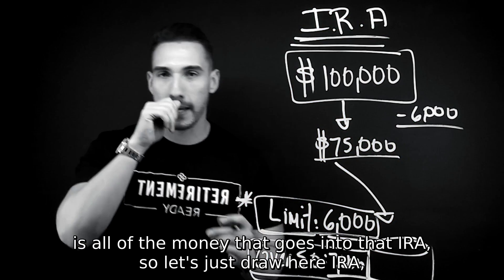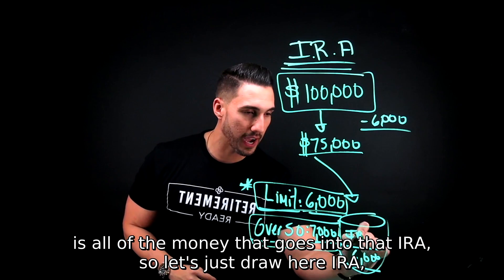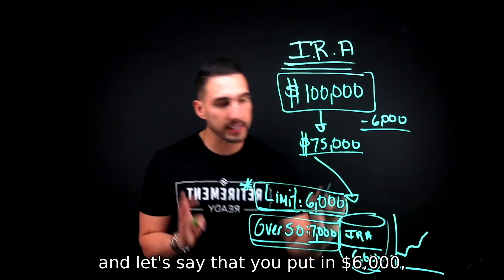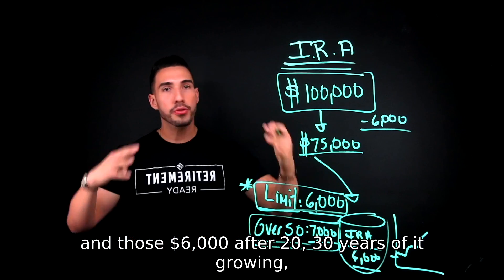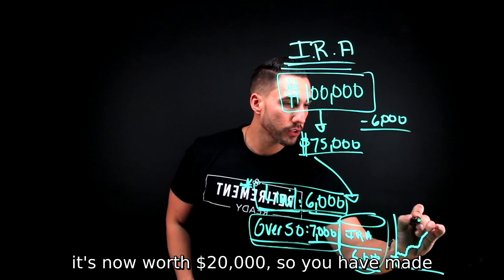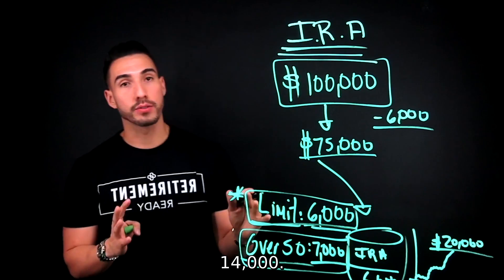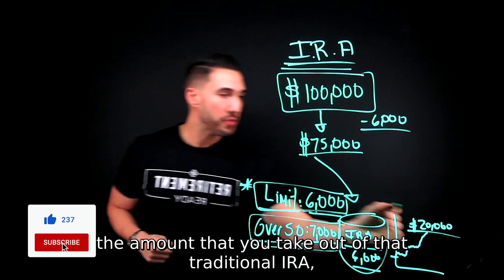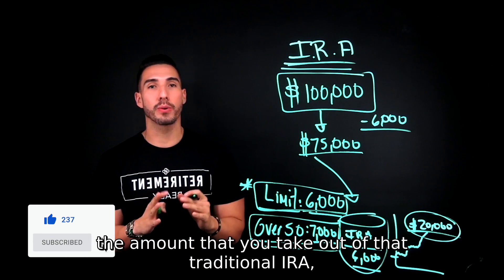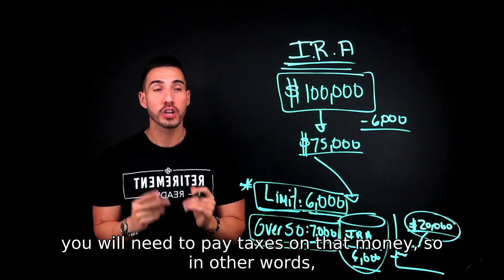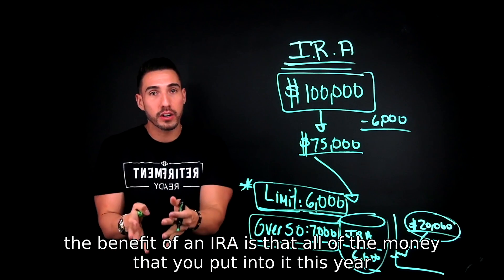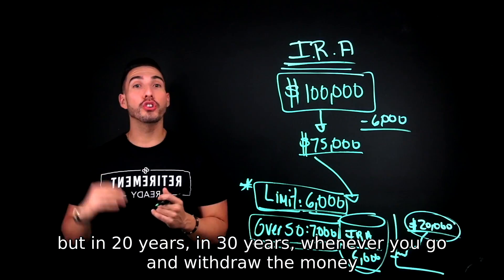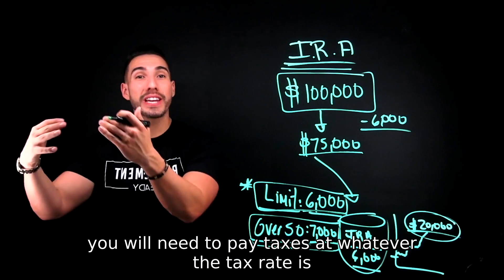Now, this is the drawback: all of the money that goes into that IRA is normally invested. Those $6,000 are going to grow over time. Let's say you put in $6,000 and after 20 or 30 years it's now worth $20,000 — you've made $14,000. When you go and withdraw that money, the amount you take out of that traditional IRA you will need to pay taxes on at whatever the tax rate is at that point in time.